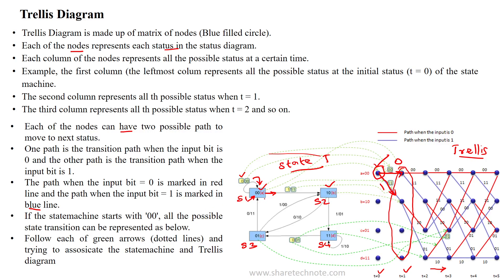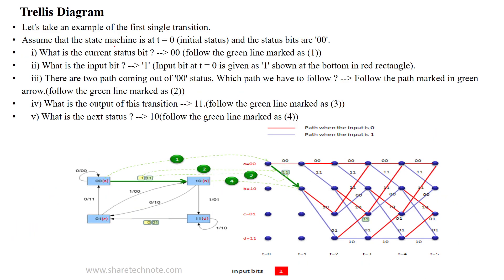The state transition machine starts from input 1 moving to state 10. In this simple example, the state transition machine is at time period 0. It is moving from state 00 to state 10 over input 1, moving from time t=0. Over input 1, this movement is denoted with a blue line, and over input 0, it is indicated with a red line.